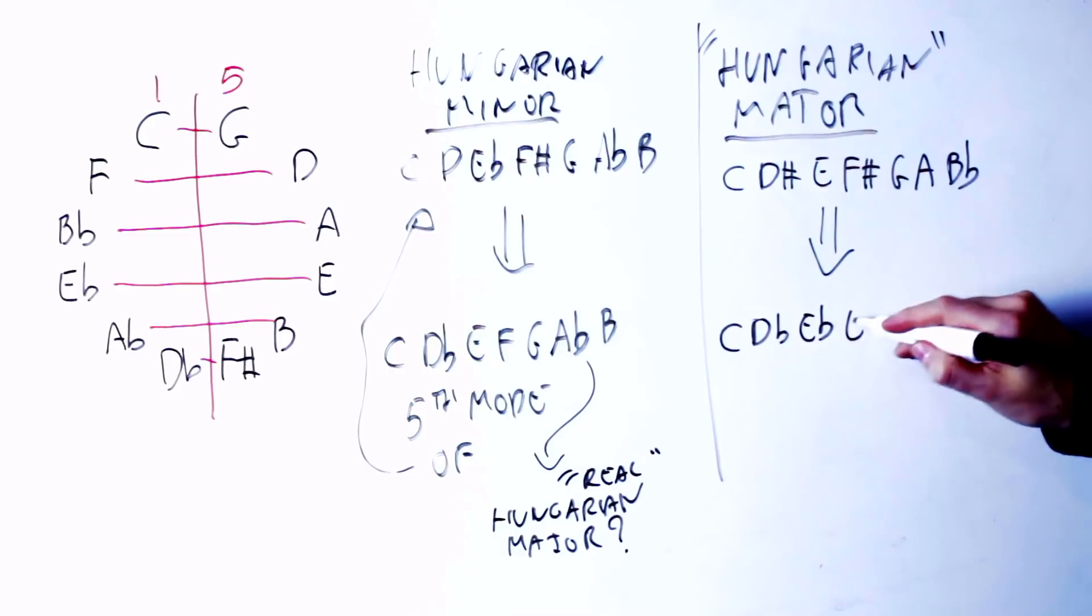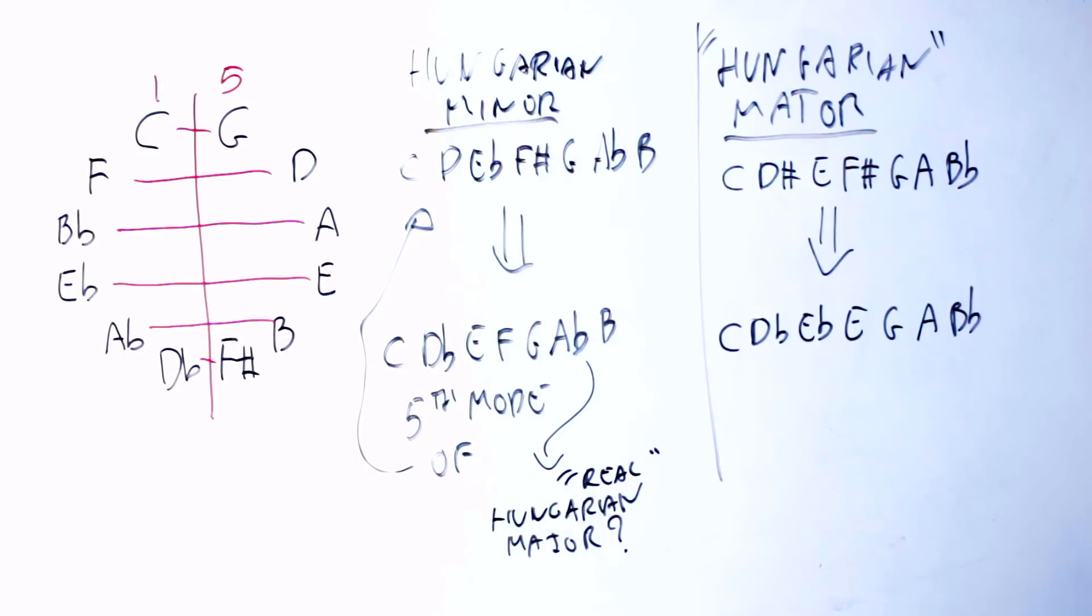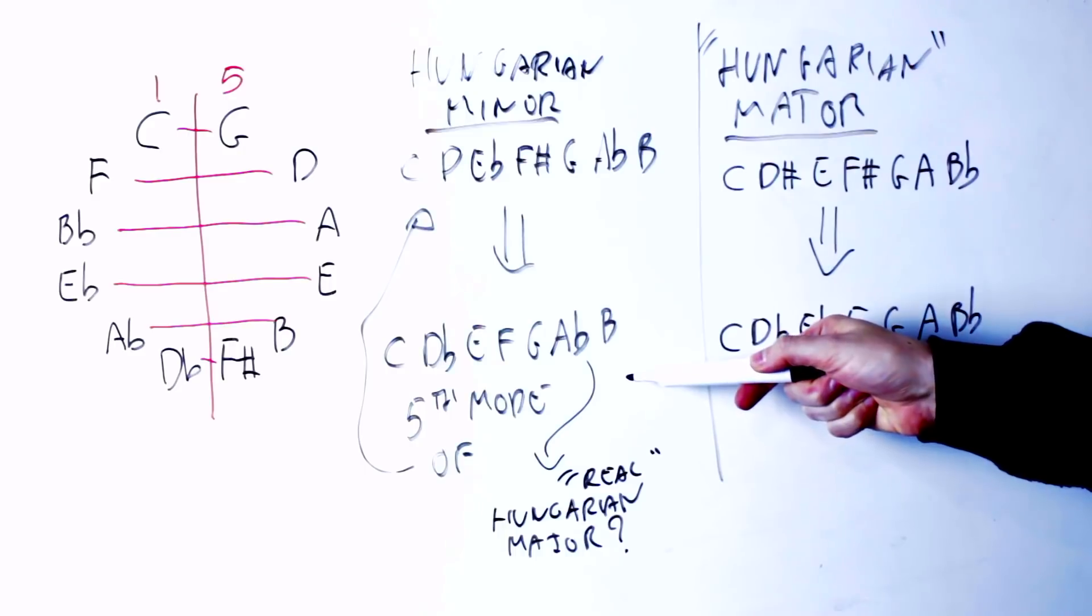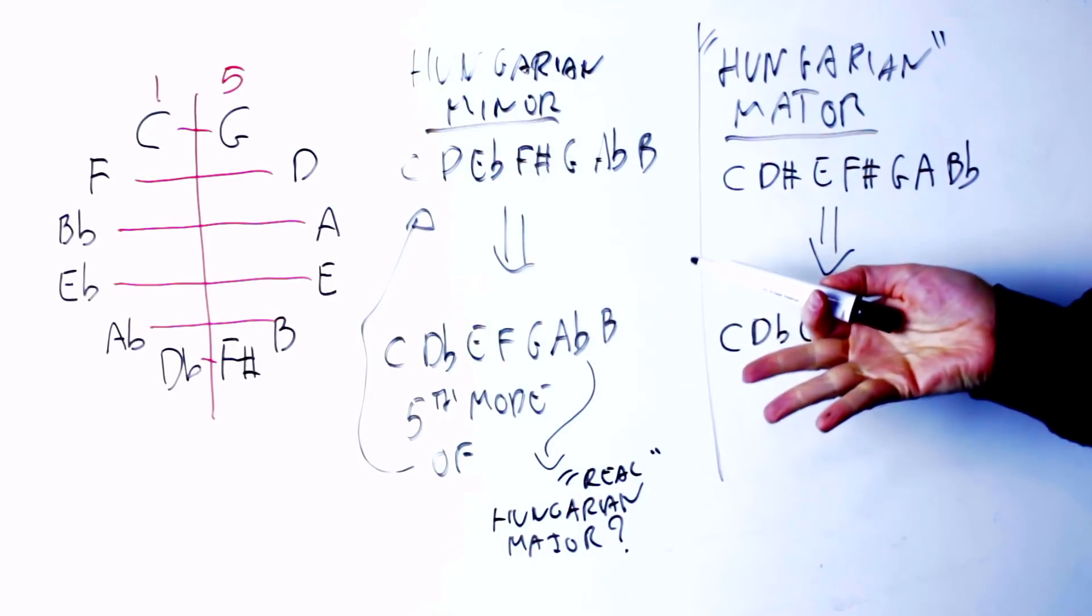But if I apply negative harmony to what we call the Hungarian major scale, I get C, D flat, E flat, E, G, A, B flat, and this reminds me of a strange lopsided altered scale. Either way, you can take the conclusion you want regarding the Hungarian minor, but honestly, personally, I think that I would rename this one the Hungarian major if I were to rewrite music theory from scratch. But that's just my opinion.